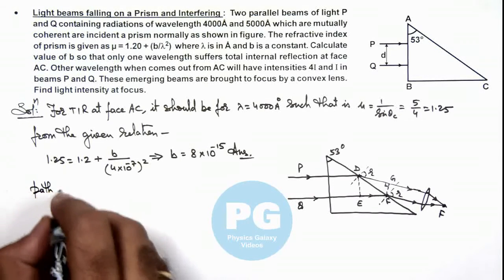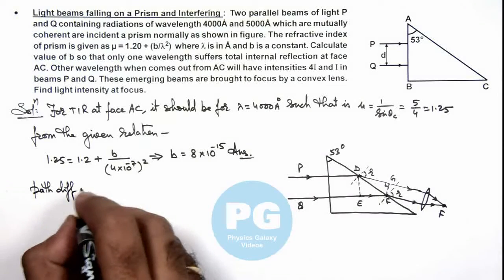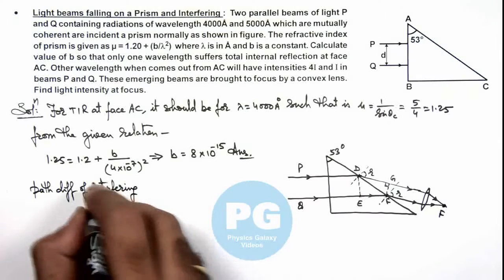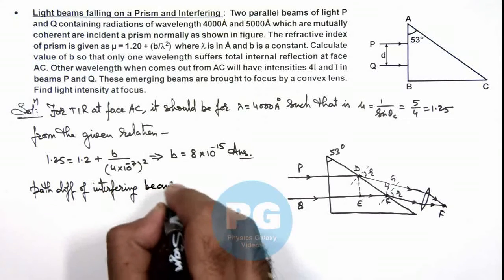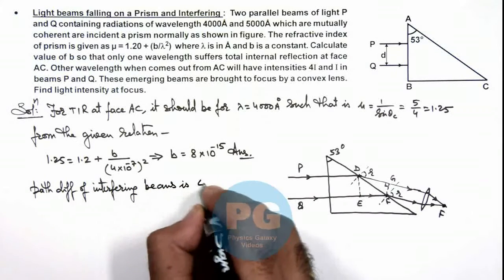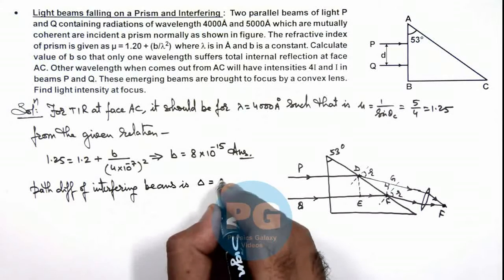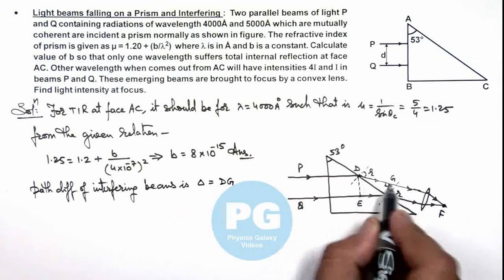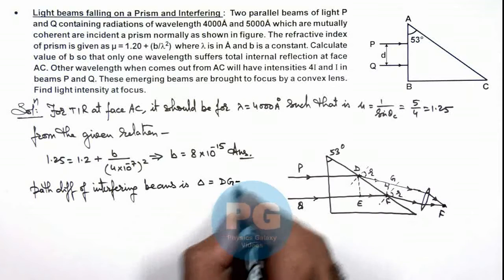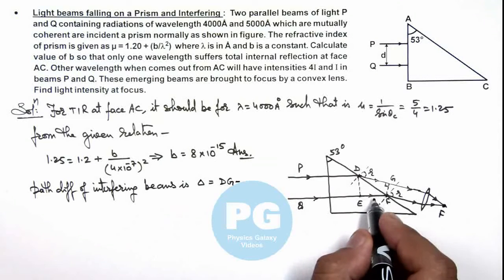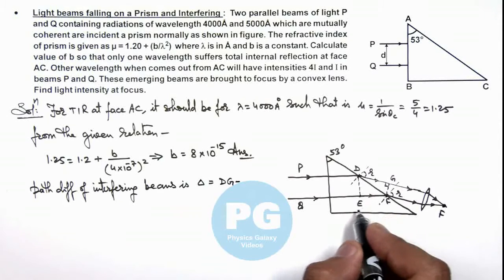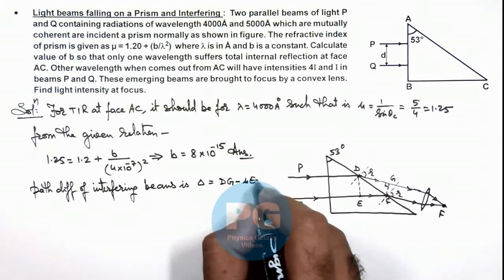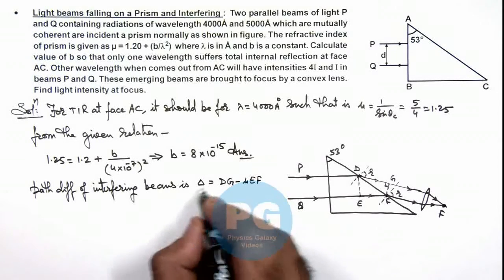So in this situation here we can see path difference of interfering beams is Δ and this we can write DG is the path travelled by beam P minus EF, but EF is given in the prism so we must multiply it with μ. So it should be μ times EF, which is the total path difference in air.